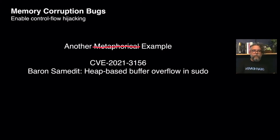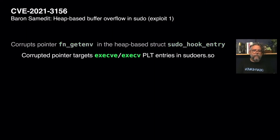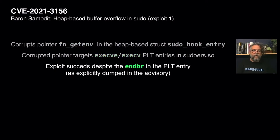Now let's talk about a not-so-metaphorical example: the sudo heap-based buffer overflow recently described in an advisory released by Qualys. If you look at the advisory, you will notice there are three different methods for exploiting the bug. Here I'll be focusing on the first one. In this method, the attacker corrupts the pointer fn-get-env, which is in the heap-based struct sudo_hook_entry, and the corrupted pointer targets either the execve or execve PLT entries in the sudoers.so file. If you look at the assembly dumps in the Qualys advisory, you will notice that the PLT entries display end-branch instructions, showing that IBT is in place, and yet it was not sufficient to prevent the control flow hijacking attack.